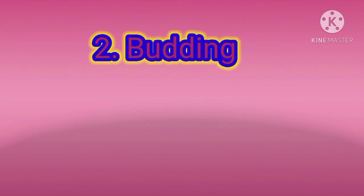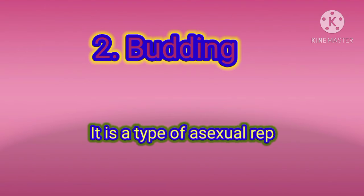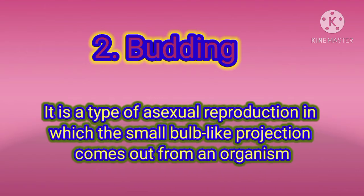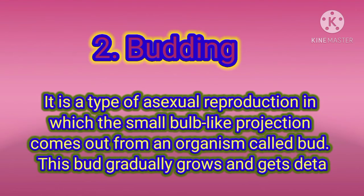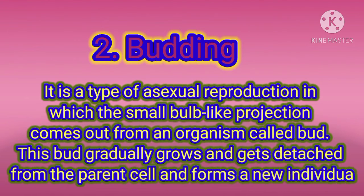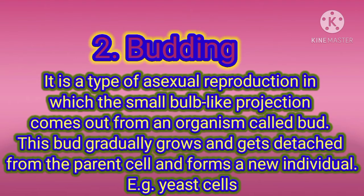The second type of asexual reproduction is budding. It is a type of reproduction in which a small bulb-like projection comes out from an organism that is called a bud. This bud gradually grows and gets detached from the parent cell and forms a new individual. For example, yeast cells.